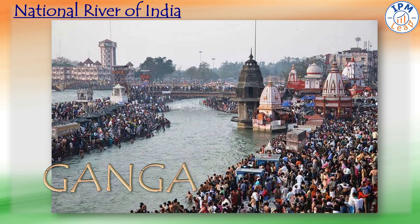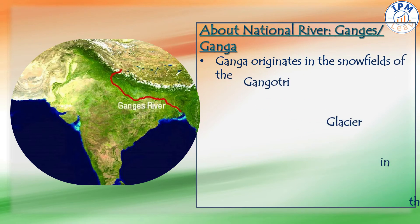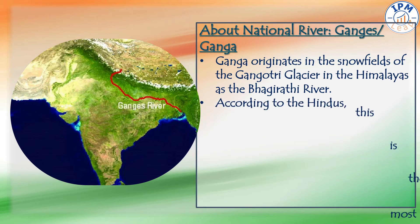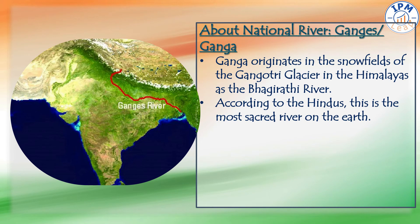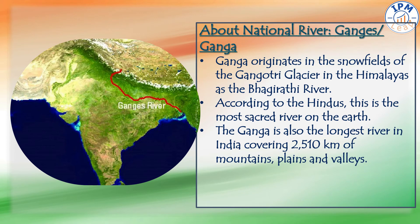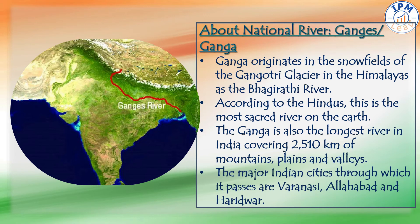Our national river is the Ganga, or the Ganges. Ganga originates in the snow fields of the Gangotri Glacier in the Himalayas as the Bhagirathi River. According to Hindus, it is the most sacred river on earth. The Ganga is also the longest river in India, covering 2,510 km of mountains, plains and valleys. The major Indian cities through which it passes are Varanasi, Allahabad and Haridwar.